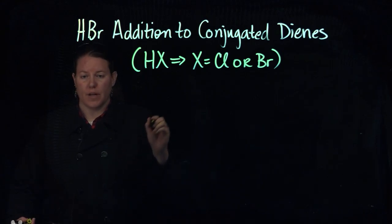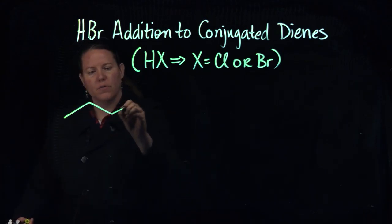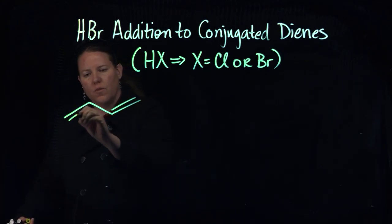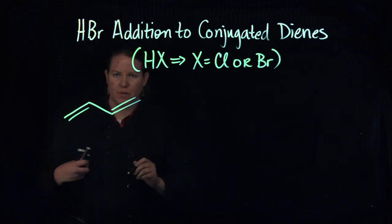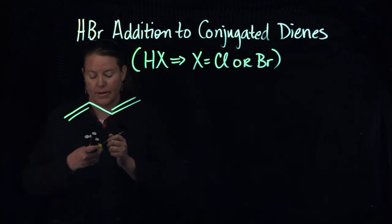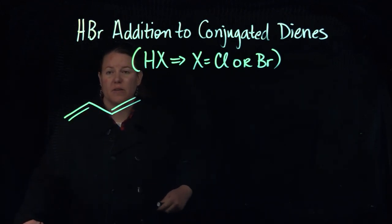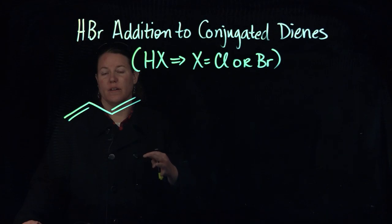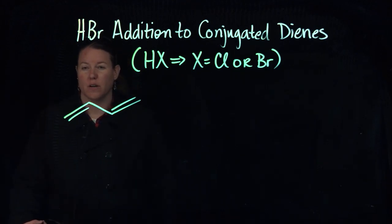We're going to start off with a conjugated diene and we almost always start off with the same conjugated diene, which is 1,3-butadiene. The reason why we like butadiene so much is because it really clearly demonstrates what the different products are. You can certainly do this with any conjugated diene, but we're going to start off with this one.